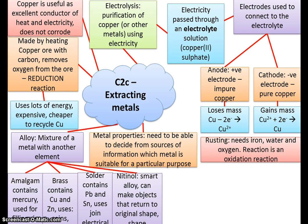Brass contains copper and zinc. If you're asked what it's used for, think about a brass band — that tells you brass is used to make musical instruments. It's also used to make coins. Solder — think about a soldering iron, a long thin red-hot iron used to connect electrical wires. When you put the hot iron by the electrical connections and add a little solder, the heat melts the solder, which sets over the two wires and creates a junction so electricity can pass through.